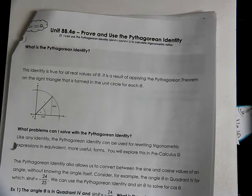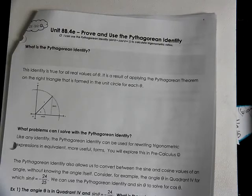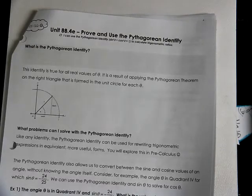This is Algebra 2 with Trigg, 8B.4E. We're going to use the Pythagorean Identity.